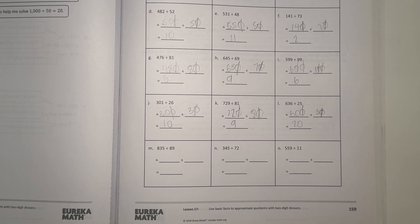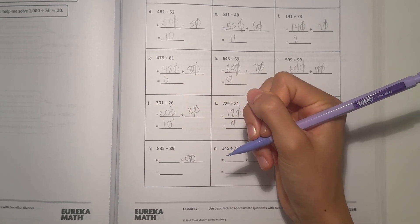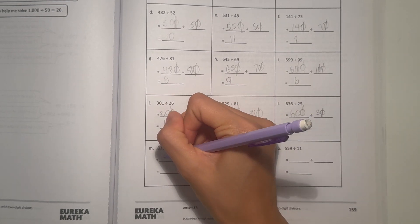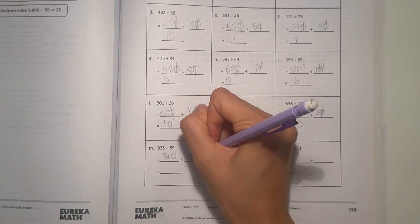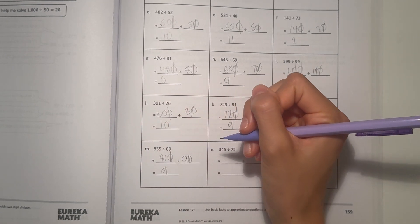835 divided by 89. 89 rounds to 90. So let's see, 835, 810 is the number that can go into. If we cross off the zeros, 81 divided by 9 is 9. So that's our estimate.